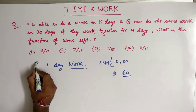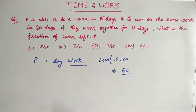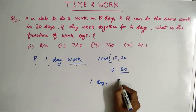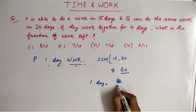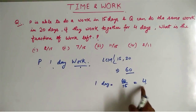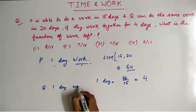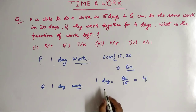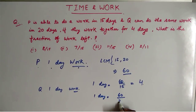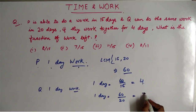Now we will find out what is P's one-day work. P is doing 60 amount of work in 15 days, so in one day he will do 60 by 15, that is 4. P's one-day work is 4. Similarly for Q, one-day work will be 60 divided by 20, since he is able to complete the work in 20 days. So Q's one-day work is 3.